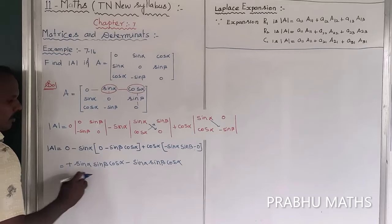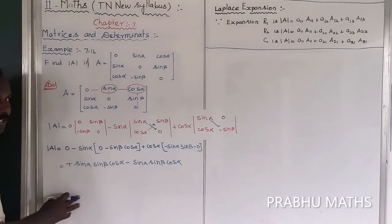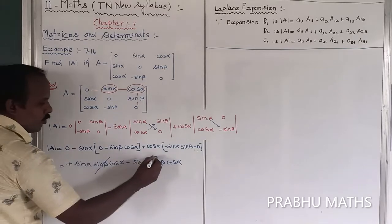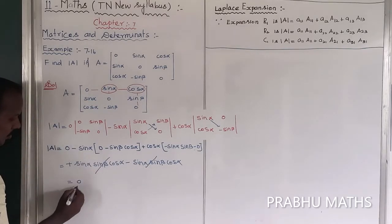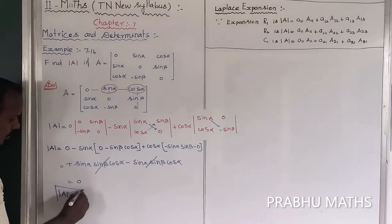These two terms are equal in magnitude but opposite in sign, so they cancel out. Therefore, the determinant of A is equal to zero.